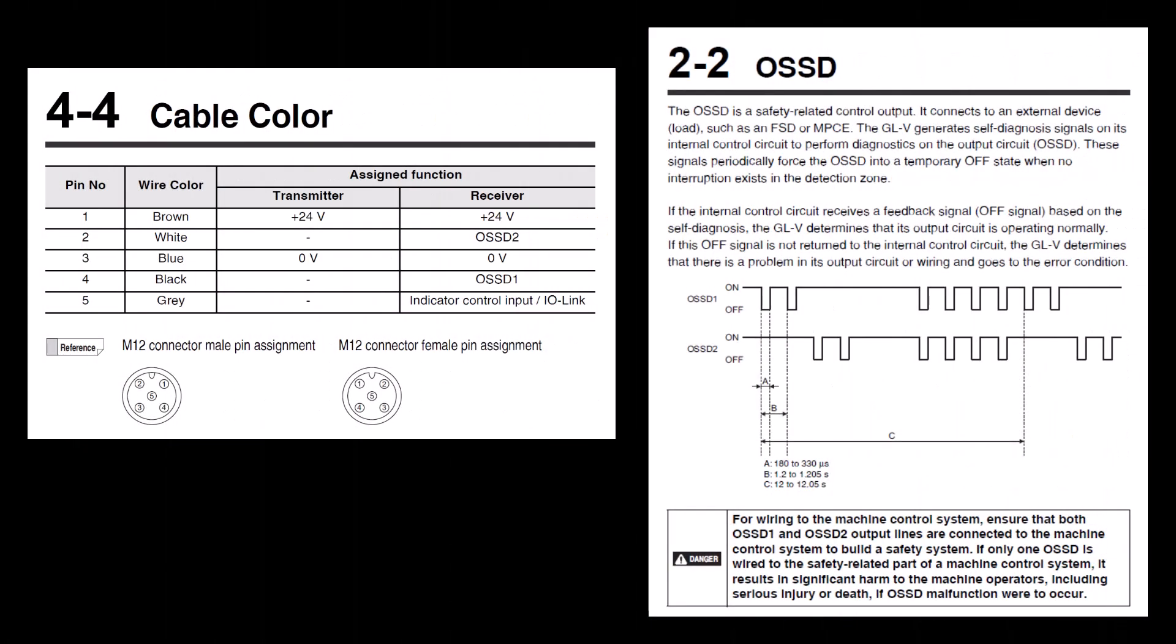Now that you're done installing and aligning the curtains, you just need to use the OSSD safety outputs, which are found on pins 2 and 4 of the receiver's M12 5-pin connector. These will be your main safety output wires that will connect into your safety circuit on the machine.